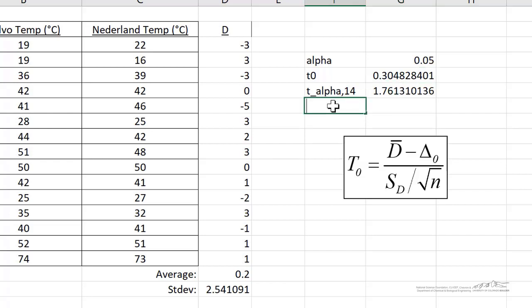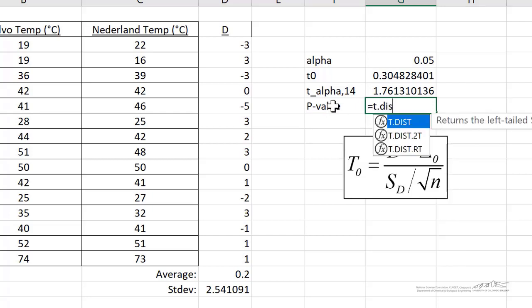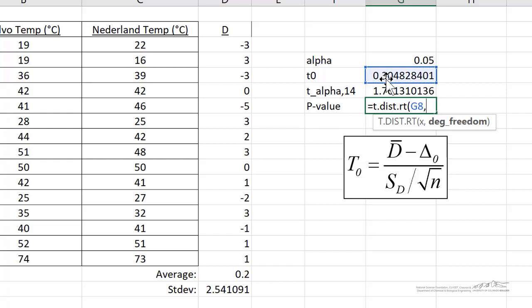We can calculate a p-value. A p-value for an upper tailed test is just the area in the curve underneath the t distribution to the right, in this case, for an upper tailed test of our test statistic with 14 degrees of freedom. Our p-value for this case is 0.382. And so that's not less than alpha of 0.05. And again, that points to our conclusion that we reject the alternate and fail to reject the null.